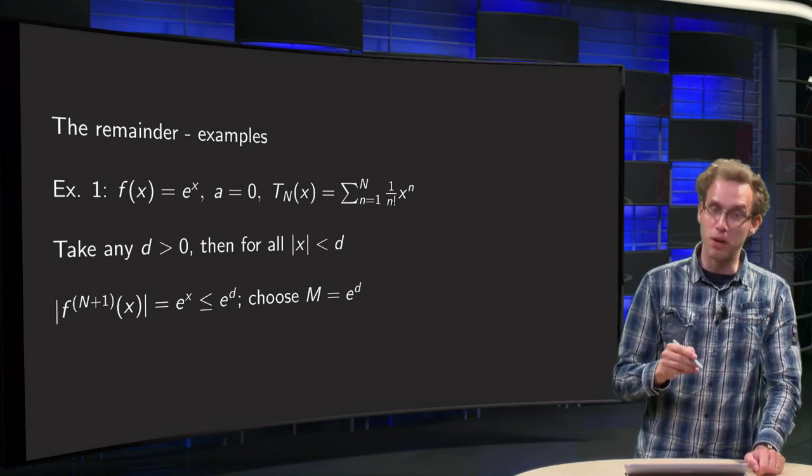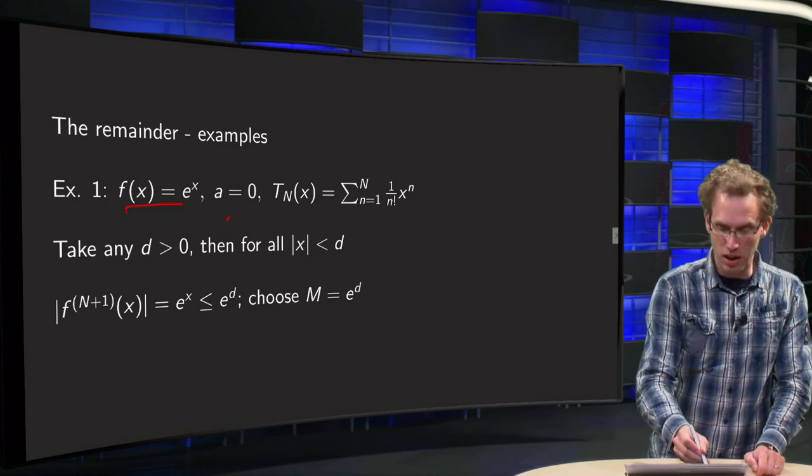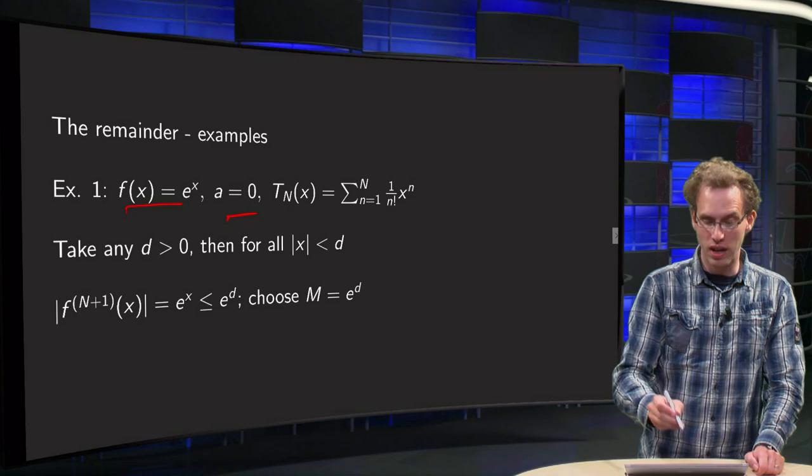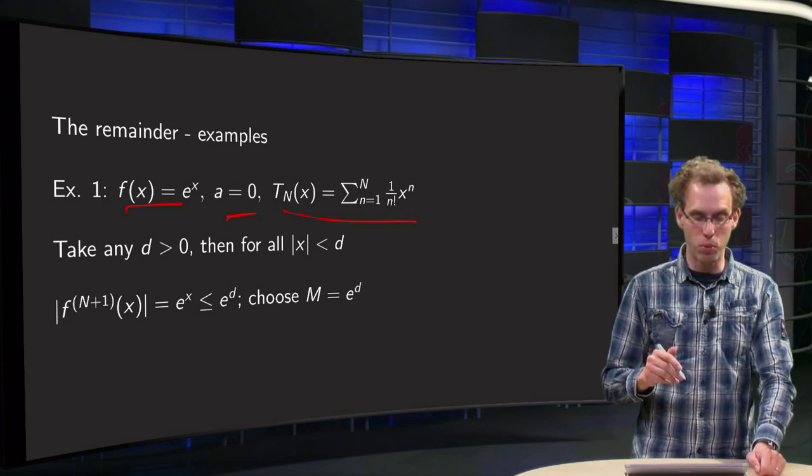So, as our first example, we use again f of x equals exponential function around 0. We know its capital N order Taylor polynomial, because all the derivatives are 1.